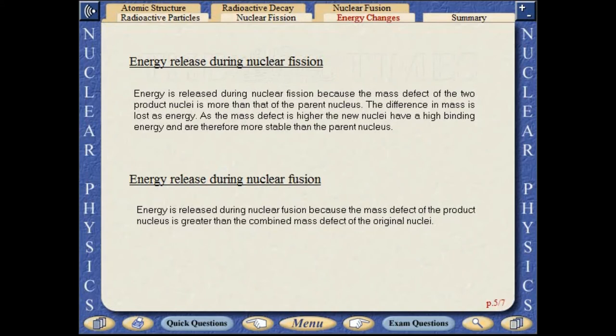Energy is released during nuclear fission because the mass defect of the two product nuclei is more than that of the parent nucleus. As the mass defect is higher, the new nuclei have a high binding energy and are therefore more stable than the parent nucleus.